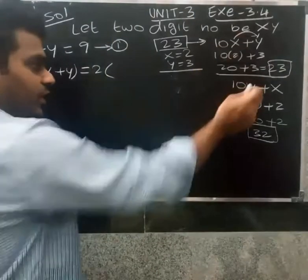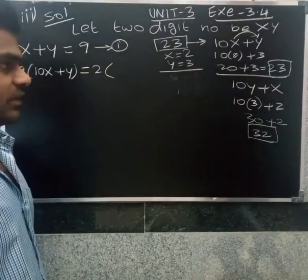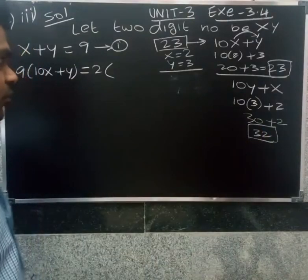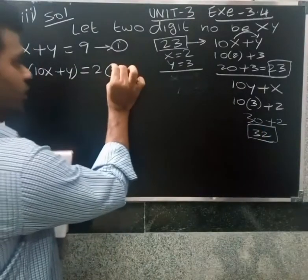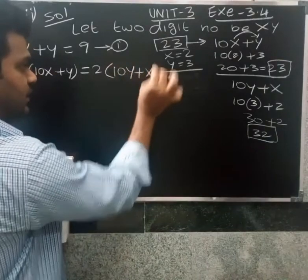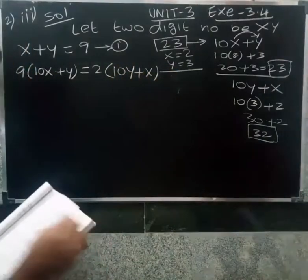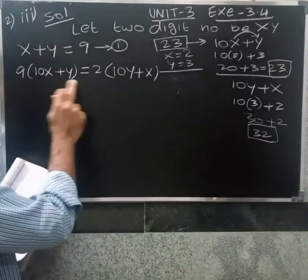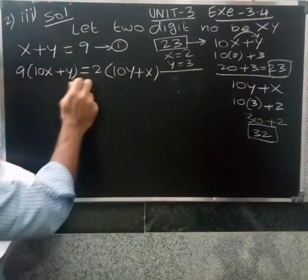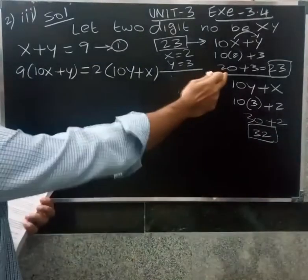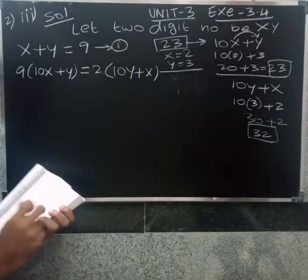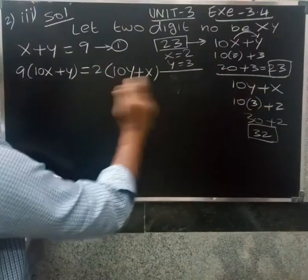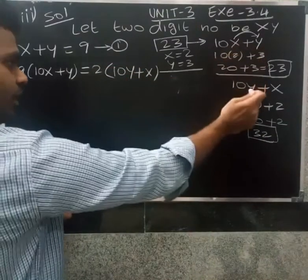The original two-digit number is 10x plus y. The reversed number is 10y plus x. So the condition becomes: 9 times the two-digit number — that is, 9 into (10x plus y) — equals twice the reversed number — that is, 2 into (10y plus x).